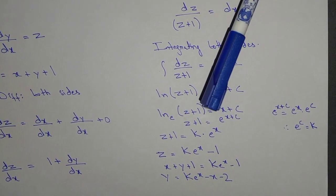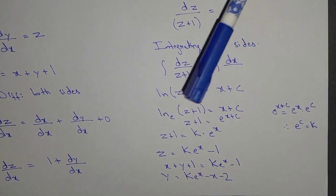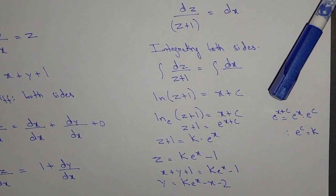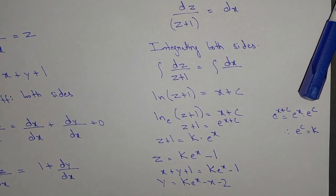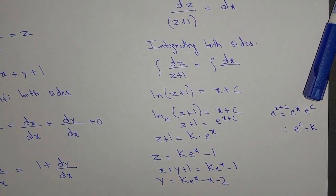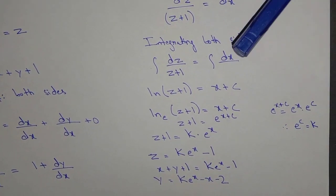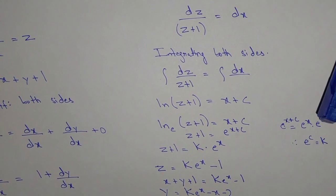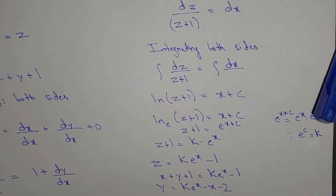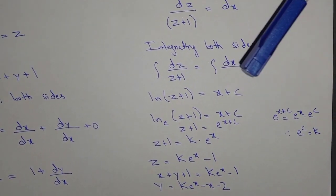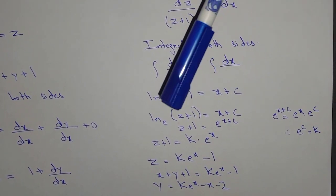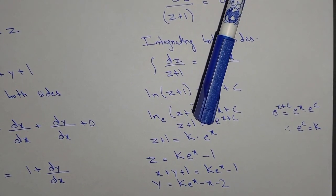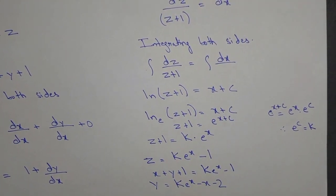So ln(z plus 1) equal to x plus c, which means z plus 1 equal to e to the power (x plus c). We can write e^(x+c) as e^x times e^c, and since e^c is just a constant, we write z plus 1 equal to k times e^x.